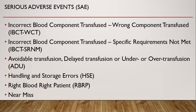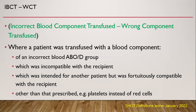This is the event: incorrect blood component transfused — wrong component transfused. This is where a patient was transfused with a blood component of an incorrect blood group (ABO), which was incompatible with the recipient; or which was intended for another patient but was compatible with the recipient; or other than that prescribed, for example, platelet instead of red cells.